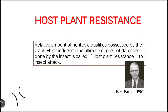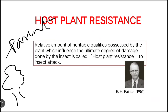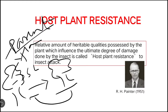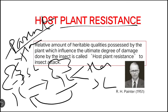Suppose this is a parent plant. The next generation offspring inherits the same qualities from the parent. If the parent plant shows resistance to Helicoverpa armigera and Spodoptera litura, and the offspring also shows the same character and resistance against those insects, then it is known as HPR — the relative amount of heritable qualities transferred to the new generation.